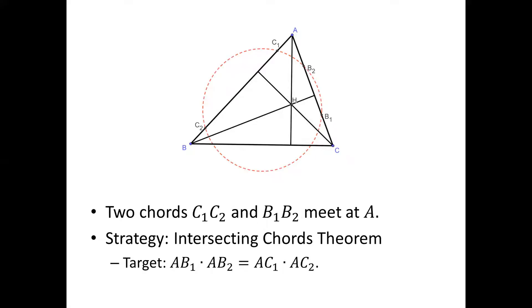If such a circle indeed exists, then C1, C2 and B1, B2 are two chords of the circle. They intersect outside of the circle at A.